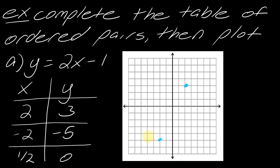For the third point, (1/2, 0), this might seem a little awkward. I need to go 1/2 in the x direction — so between 0 and 1 — and then just at y = 0. I'll mark right there. You can see that if you use a straight edge to connect these points, they should form a straight line. Those three points connect to form a line if you've done it correctly.